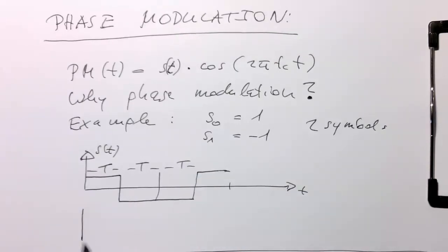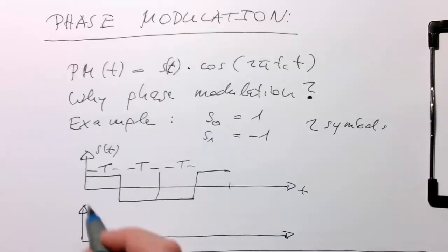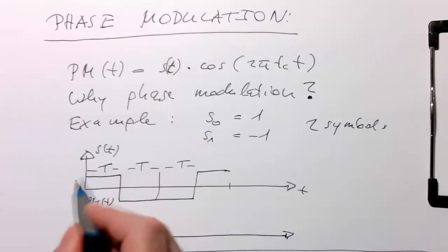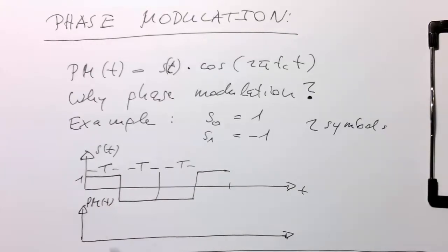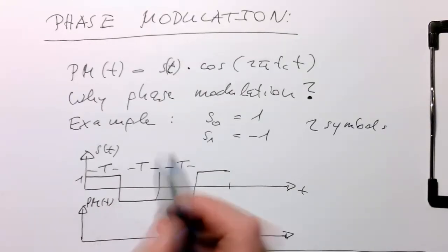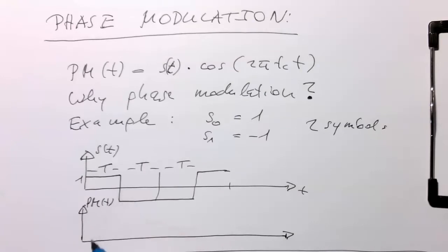How does our signal P_m(t) look like? Obviously, here at this point, if this is here 1, then this will be just multiplied by 1. This will be just a carrier. This will look like that.